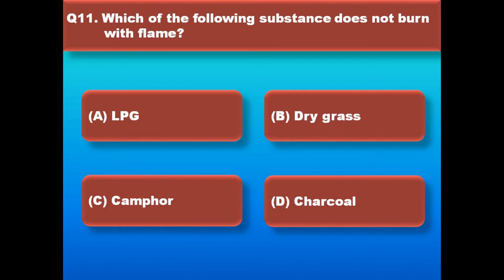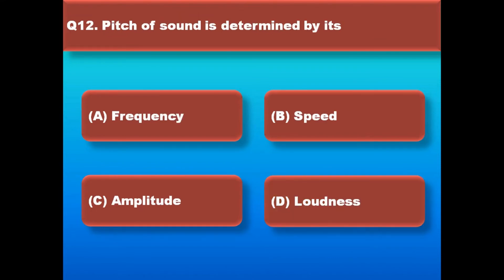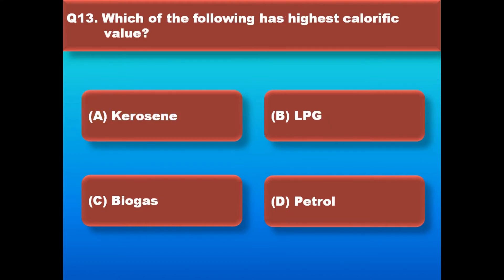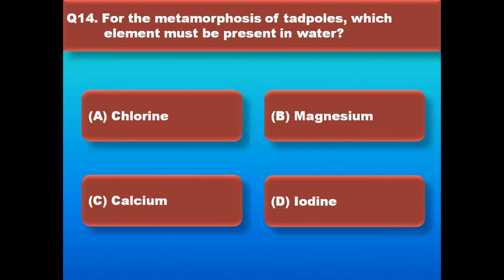Which of the following substances does not burn with a flame? Right answer is charcoal. Which property of sound is determined by its frequency? Right answer is frequency. Which of the following has the highest calorific value? Right answer is LPG.